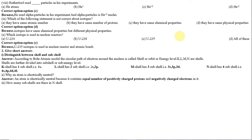Number 3: How many subshells are there in the N shell? The N shell has 4 subshells: 4s, 4p, 4d, and 4f.